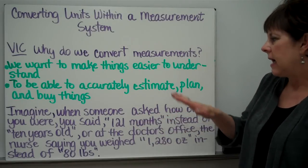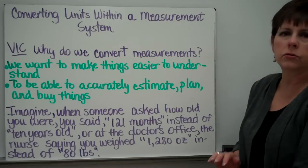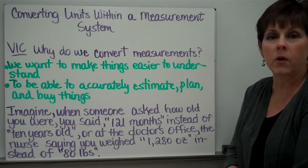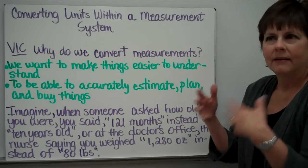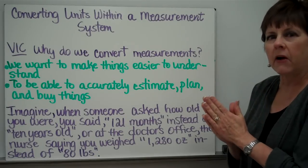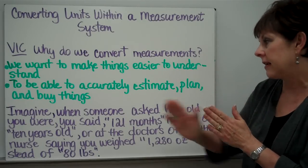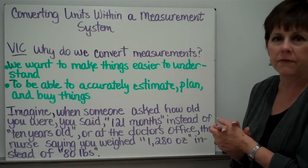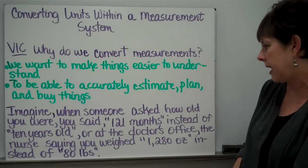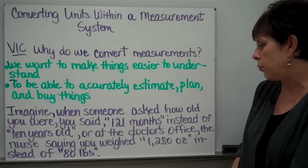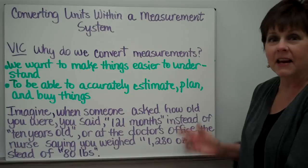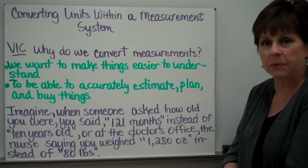Well, let's say that someone asked how old you were, and you replied, I'm 121 months old. We don't usually express our age in months like that, instead of saying I'm 10 years old. Or if you're at the doctor's office during a checkup, the nurse says you weigh 1,280 ounces instead of saying you weigh 80 pounds.